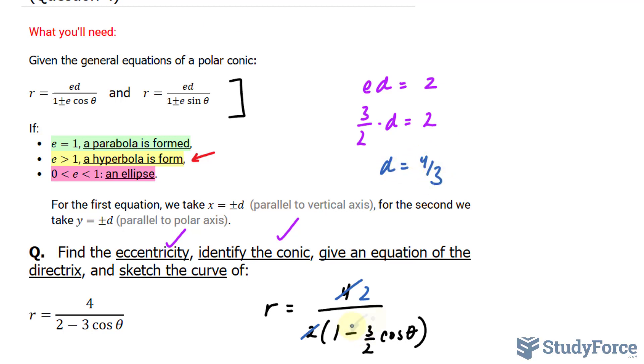Now since in our equation it's one minus three over two times cosine theta, this is minus as well. So if that were plus, you would leave that as positive. They're asking for an equation of the directrix. So rather than d equals, I'll write down x equals negative four over three.